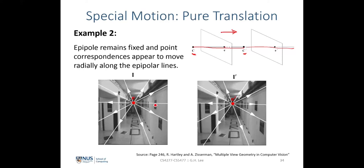Any point x in the first view moves to a location x' in the second view. Because the epipole doesn't change, the epipolar line also remains unchanged — it gets transferred to the same epipolar line on the second view. Plotting x' on the first image, we see that x' is on the same epipolar line but further out, supporting our claim that e, x, and x' are collinear. As the camera translates forward, the epipole remains static and all correspondence points appear to move radially outward from the epipole as the center.